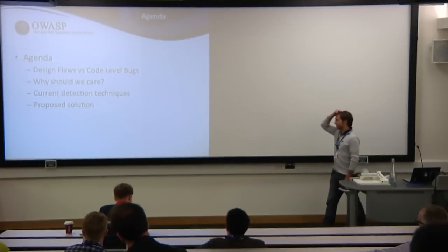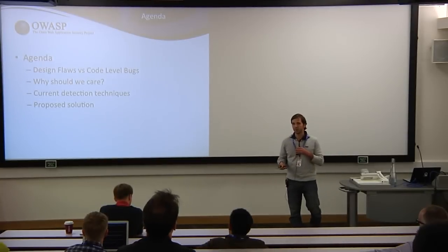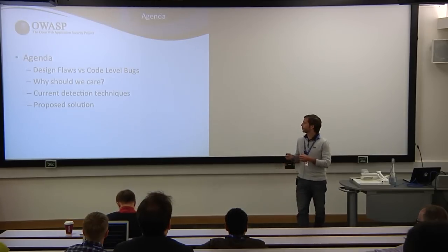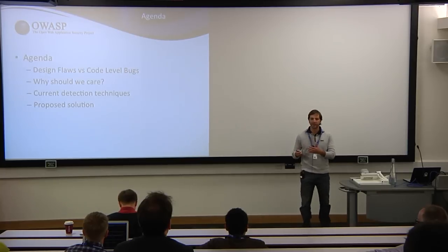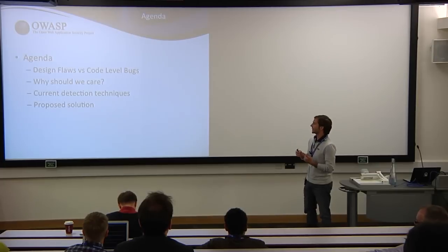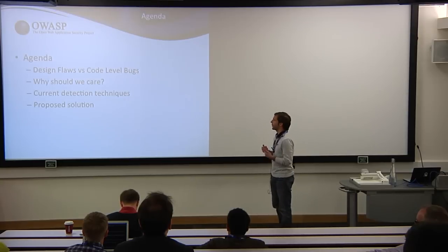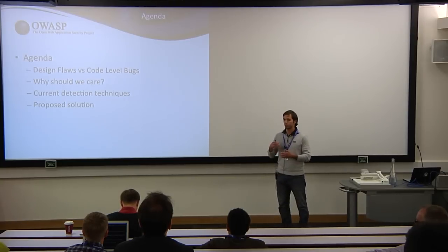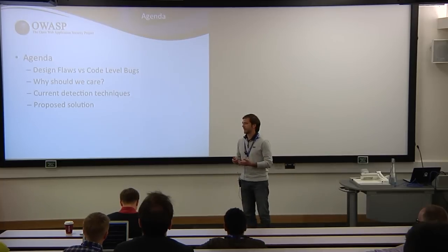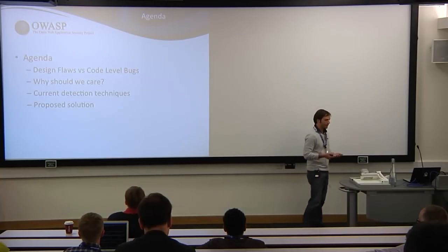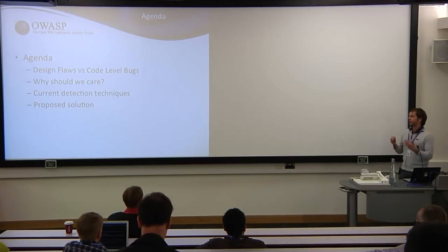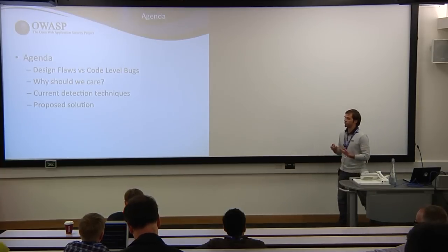The idea for this talk is to first discuss the distinction between design flaws and code-level bugs, why we should care about finding design flaws, whether they're present in real-world applications, and what the current detection techniques are. We're going to propose a novel technique to find them using purely static analysis approaches. This is not even a beta — it's a POC — but it's working and we're proving it on real-world applications with very good results.